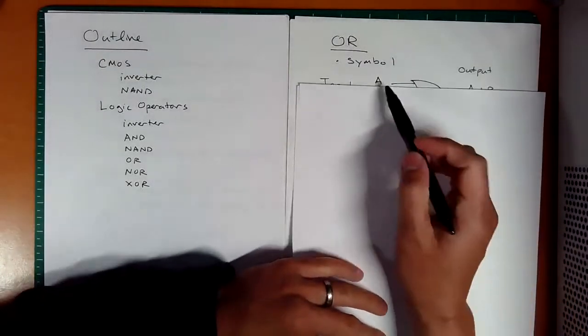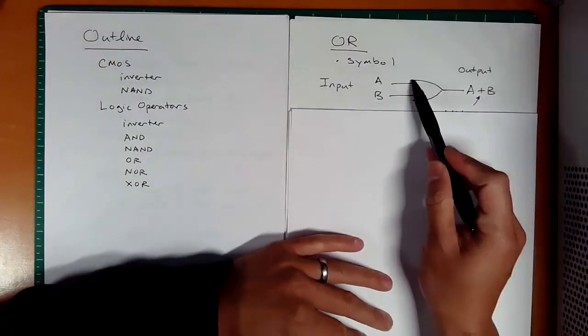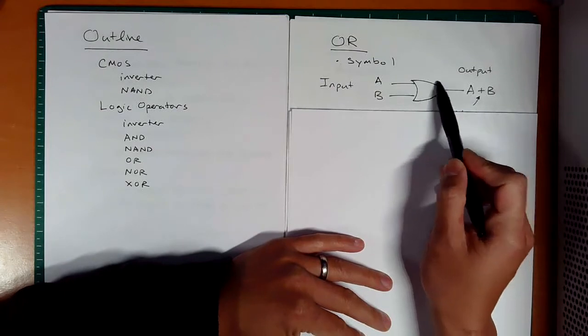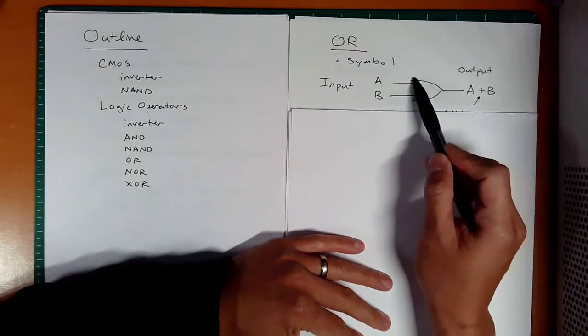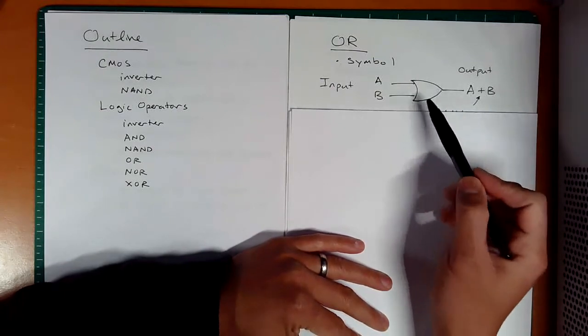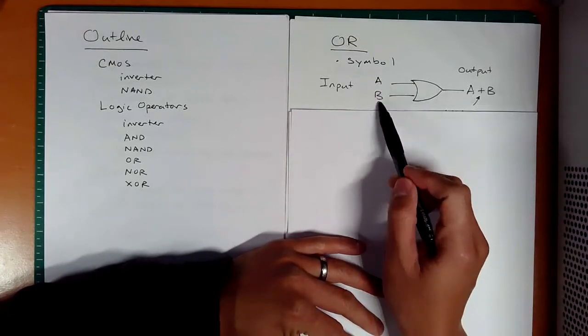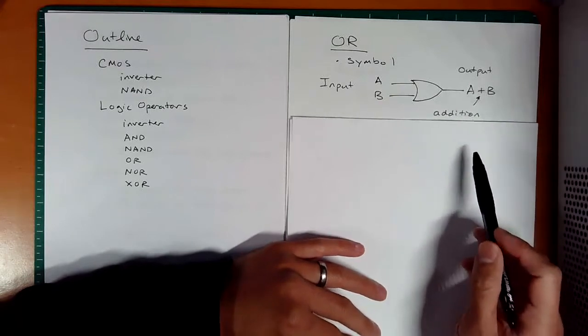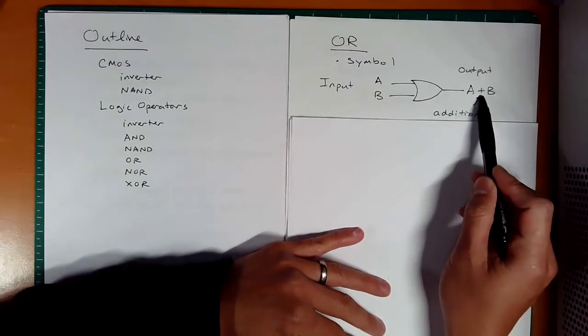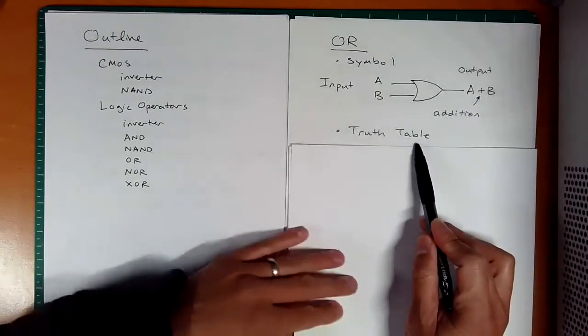So let's look at OR. The OR symbol looks like this Star Trek Enterprise on its side with the little pointy ends, not the bullet like the AND. We have two inputs, and instead of multiplication for the output, we actually have addition here. What does the truth table look like?